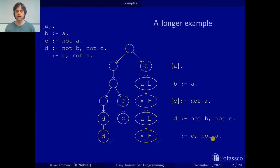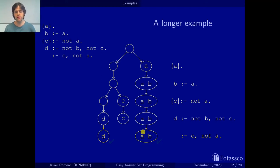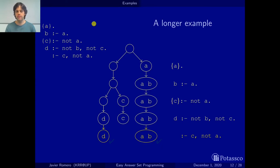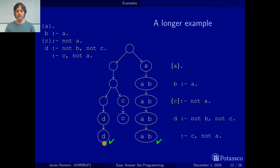The constraint deletes the set that contains C and does not contain A — this is the only one. This set does not contain C, so the constraint does not apply. This one contains A, so the constraint is not violated — it survives. We are left with these two, which are the answer sets — or equivalently, the stable models — of these five rules. These are the answer sets of this program because we applied the rules in order.